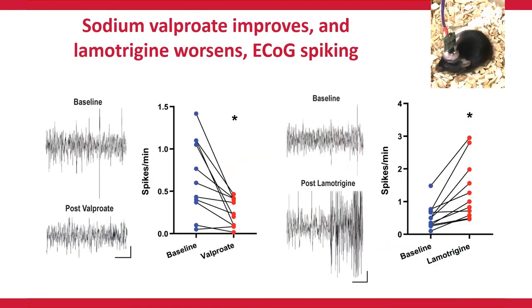We used these spikes to study the efficacy of anti-epileptic drugs. We selected two drugs: sodium valproate and lamotrigine. We chose these two drugs because they're both drugs that Ebony herself has tried, but she had very different responses to them. Valproate is a drug she's still taking because it helps her epilepsy, whereas lamotrigine is a drug she was tried on but rapidly taken off because it worsened her seizures. We found a similar pattern in our mice: sodium valproate significantly reduced ECOG spiking, and lamotrigine significantly increased it, as well as triggering full-blown seizures in a subset of our mice. This suggests that these mice respond similarly to human HCN1 epilepsy patients with respect to anti-epileptic drugs, which means hopefully we can use these mice to screen drugs that might be useful in these patients going forward.